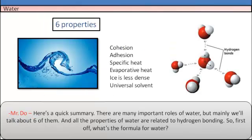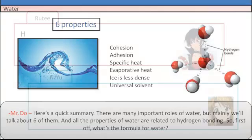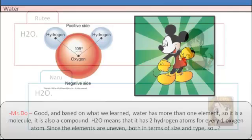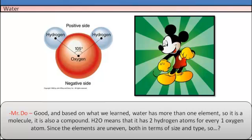Here's a quick summary. There are many important roles with water, but mainly we'll talk about sets of them. All the properties of water are related to hydrogen bonds. So first off, what's the formula for water? Good. And based on what we learned, water has more than one element, so it is a molecule. It is also a compound.